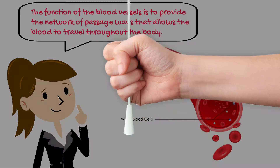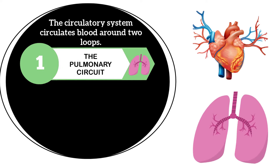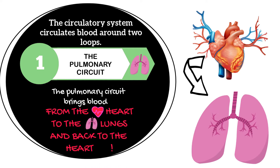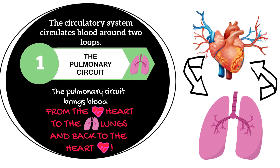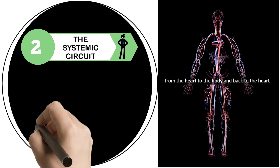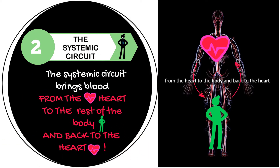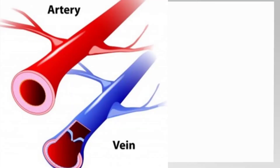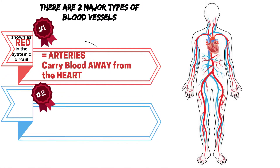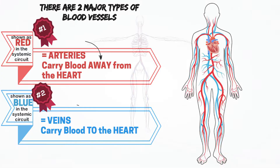The circulatory system circulates blood around two loops. The first circuit is the pulmonary circuit, which brings blood from the heart to the lungs and back to the heart. The second is called the systemic circuit, which brings blood from the heart to the rest of the body and back. There are two major types of blood vessels: arteries and veins. Arteries carry blood away from the heart; veins carry blood toward the heart.